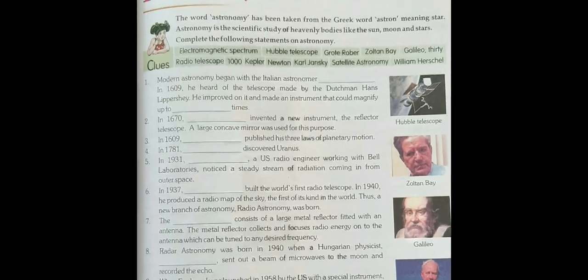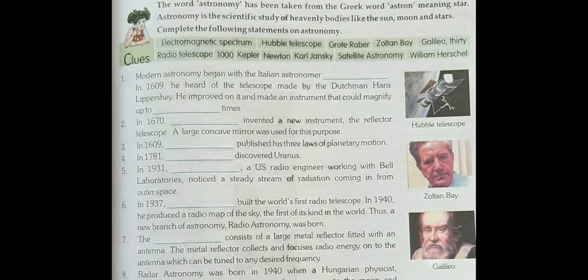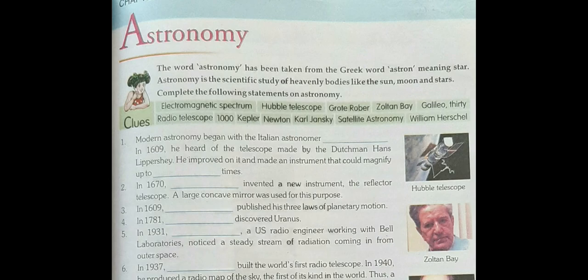What is astronomy? The word astronomy has been taken from the Greek word 'astron.' Astron means star. Astronomy is the scientific study of heavenly bodies like the sun, moon, and stars.